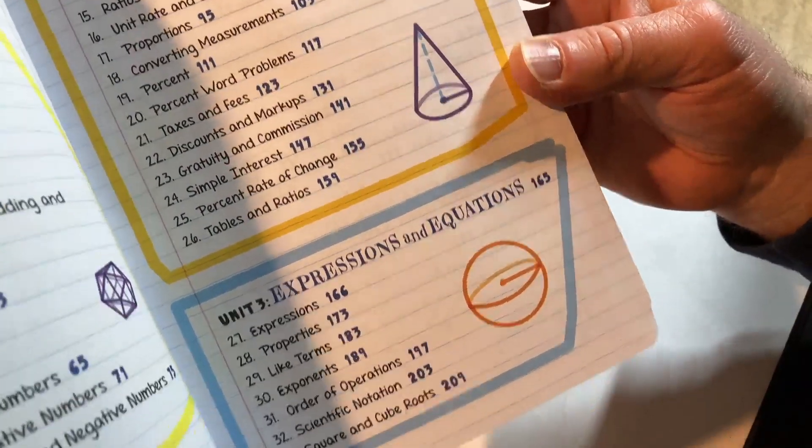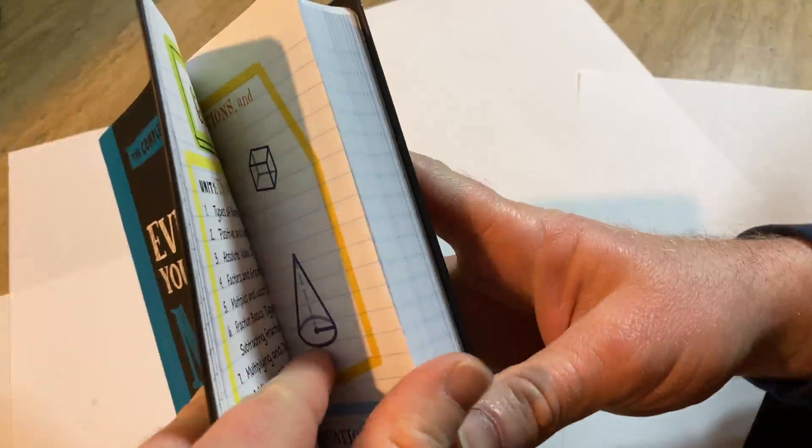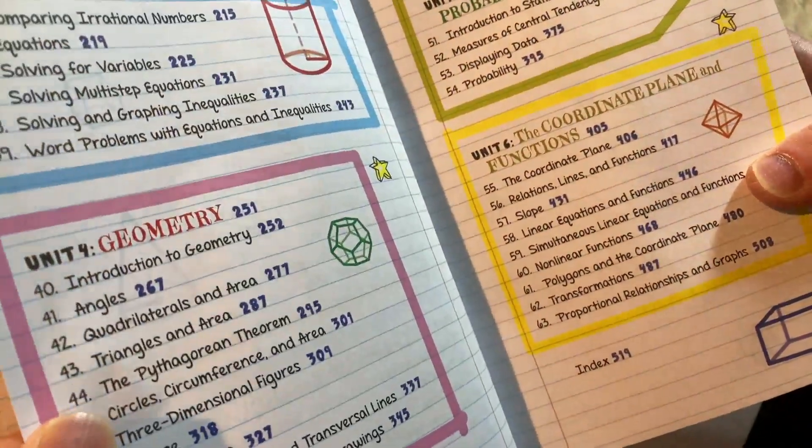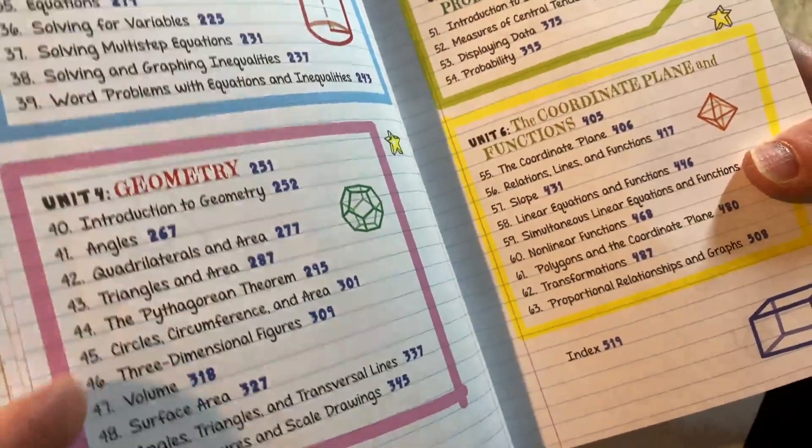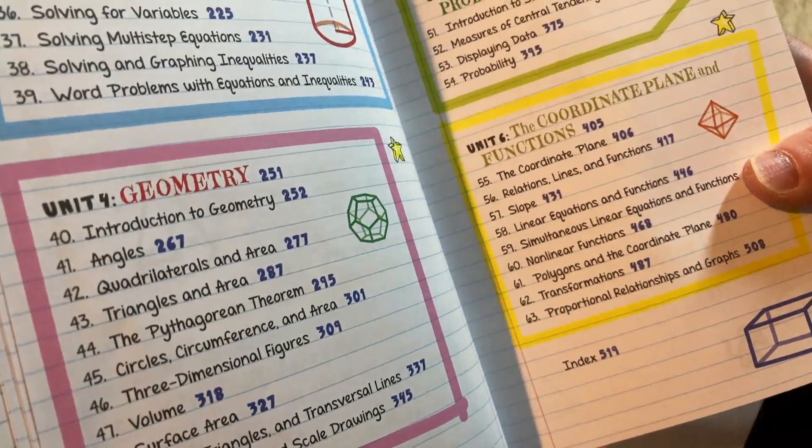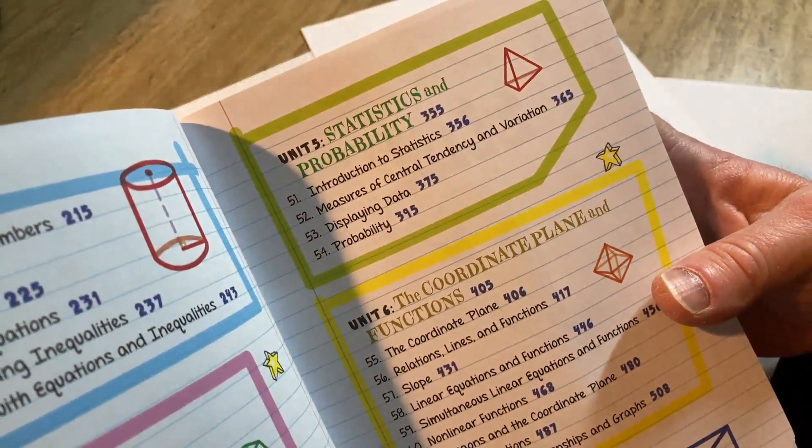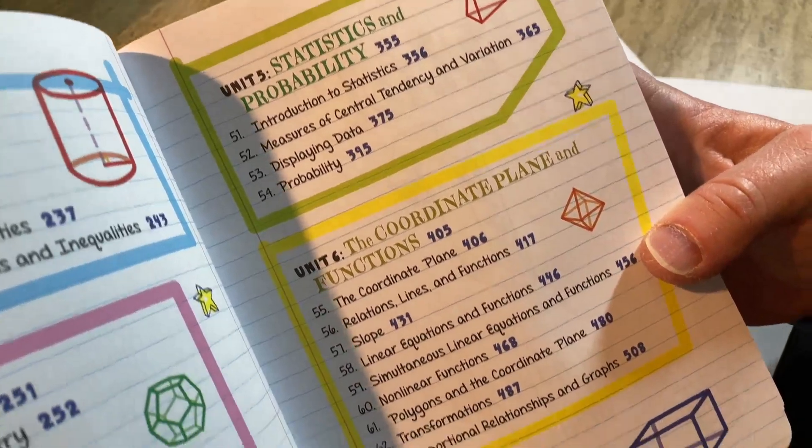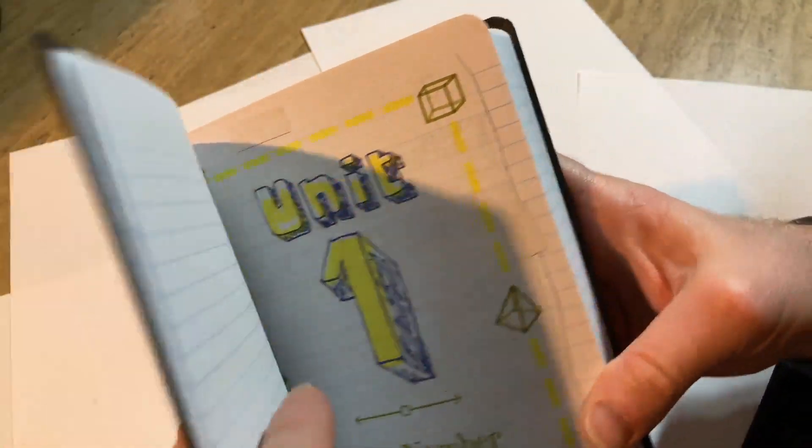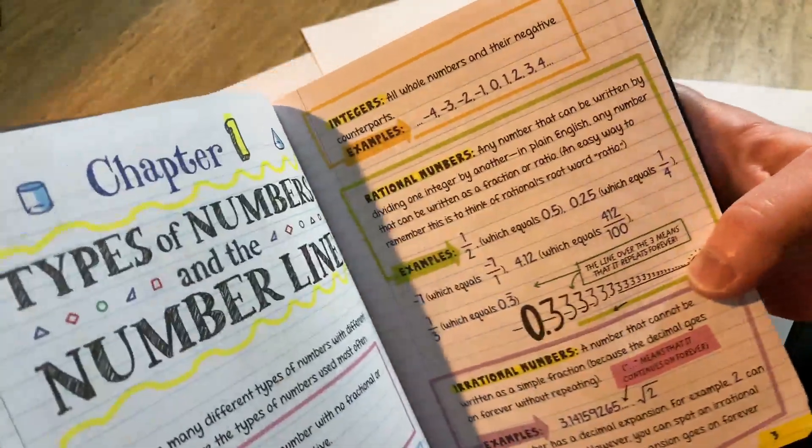Expressions and equations. Let's turn the page. Geometry. So it also has geometry in it. So maybe your geometry is rusty. This is a nice way to bring it back up to speed. It even has statistics and probability, and then the coordinate plane and functions. Let me just show you how it starts really quickly so you can see how basic it actually is.